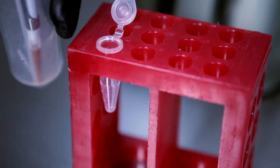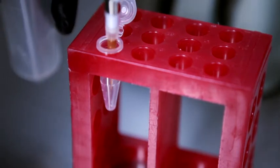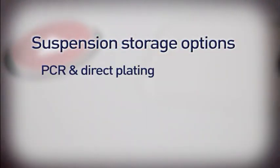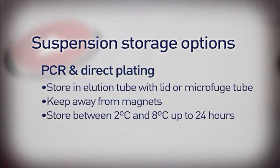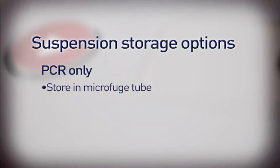If you need to store the bead suspension for later testing, you have two options. For PCR and direct plating, store the bead suspension in the elution tube with the lid or in a microfuge tube. Keep it away from magnets. Store it at a temperature between 2 and 8 degrees Celsius for up to 24 hours. If you prefer to use PCR only, transfer the bead suspension to a microfuge tube and store in a negative 20 degrees Celsius freezer for up to a month.